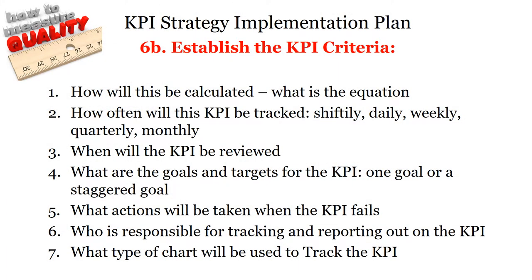Step 6b: Establish the KPI criteria. How will this be calculated? What is the equation? All charts should display the equation used to calculate the KPI metric. How often will this KPI be tracked — shifterly, daily, weekly, quarterly, monthly? When will the KPI be reviewed? Set up a routine review meeting. What are the goals and targets for the KPI — one goal or a staggered goal? What actions will be taken when the KPI fails? Who is responsible for tracking and reporting out on the KPI? Be sure to include the owner and the backup on the chart. What type of chart will be used to track the KPI?